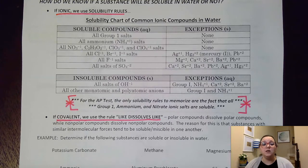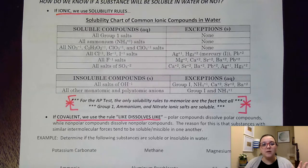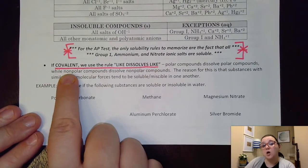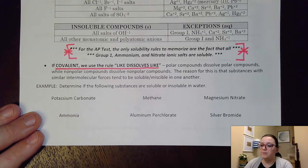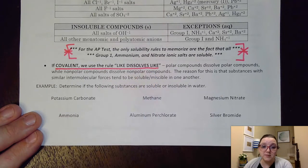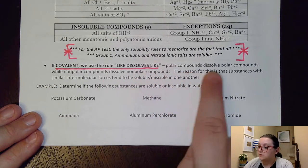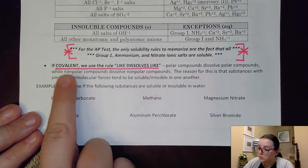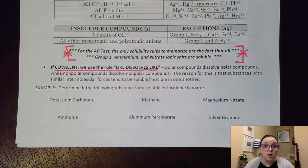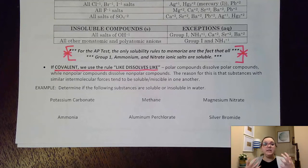Interestingly, ionic compounds do not dissolve in non-polar covalent solvents — we'll revisit that when we discuss intermolecular forces. If our substance is covalent, we can't use the solubility table. Instead we use the rule 'like dissolves like': polar compounds dissolve polar compounds, and non-polars dissolve non-polars. However, if you have something polar and something non-polar — for example water and oil — they will not mix. The polarity needs to be the same.